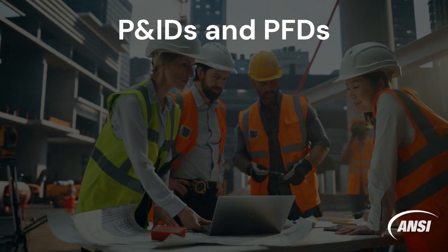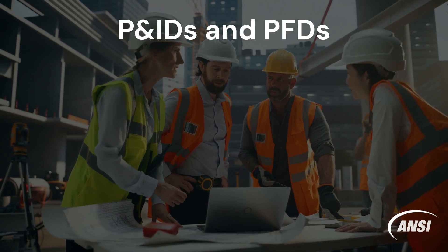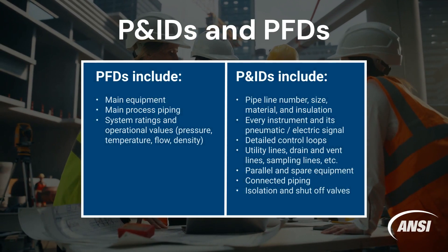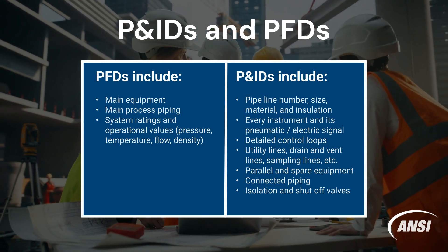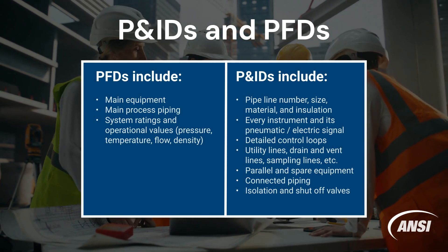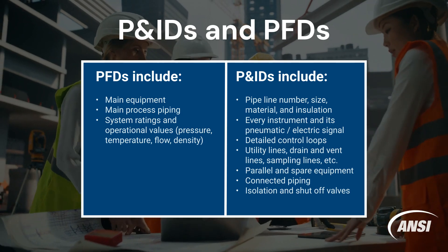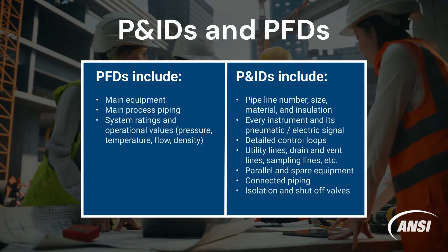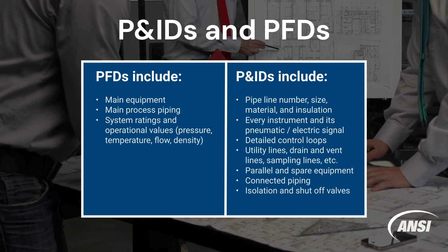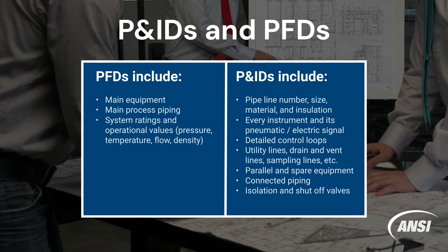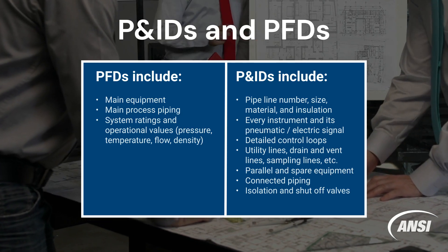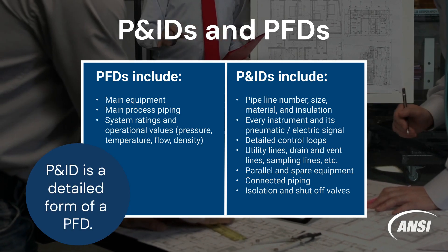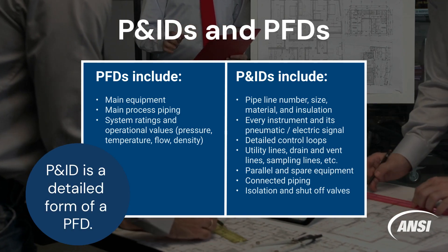Piping and instrumentation diagrams can often be confused with process flow diagrams. A process flow diagram shows the connectivity and relationships between the main equipment and units of a process, while a piping and instrumentation diagram typically includes more information about piping, controllers and valves. Additionally, piping and instrumentation diagrams do not contain operational specifications that process flow diagrams do, such as flows and stream compositions. Essentially, a process flow diagram is a simplified version of a piping and instrumentation diagram.